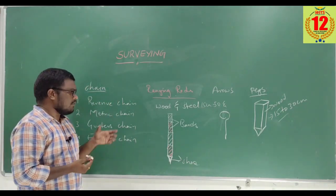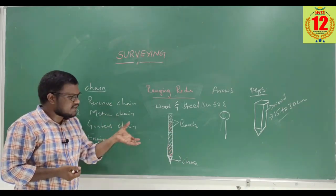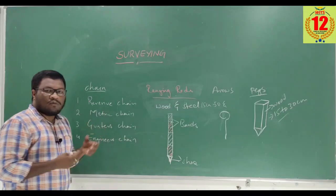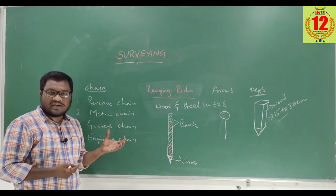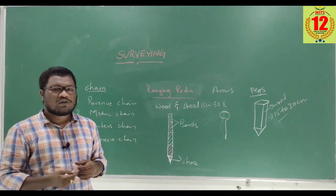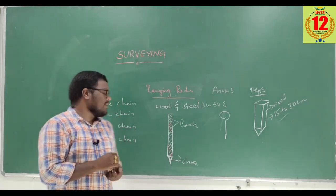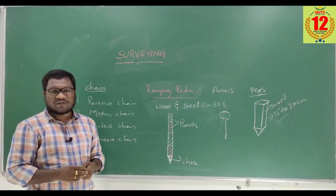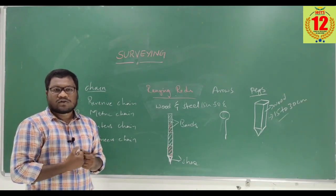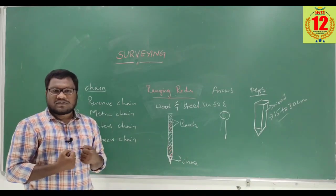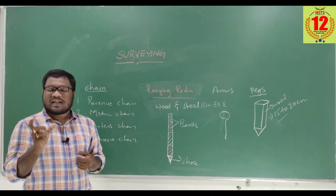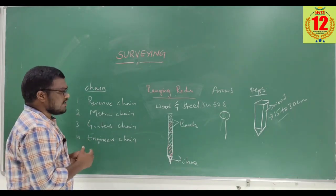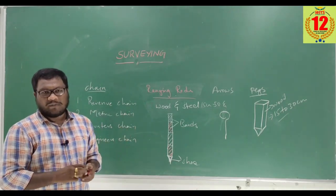These are the four main instruments used in chain surveying. In our next class, we will discuss all the different types of chains, ranging rods, arrows, and pegs individually — including the different lengths available for chains, the different parts of a chain such as the joint connecting the handle and chain, the length of a link, and the tallies. Thank you.